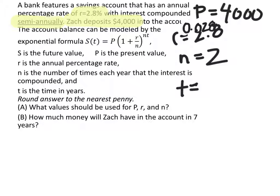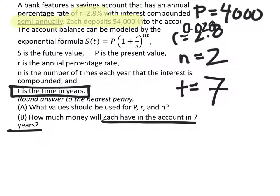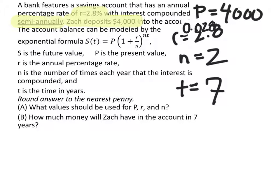In part B, notice it tells us that Zach will have the money in the account for T equals seven years, because T is the time in years. Now that we have all of this, we just need to rewrite this function, replacing the letters with the values we have.